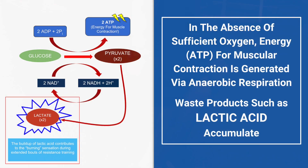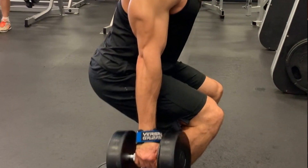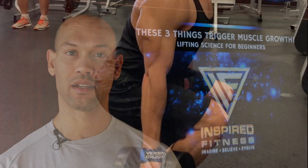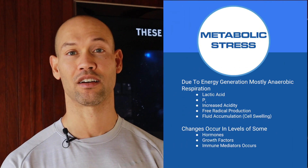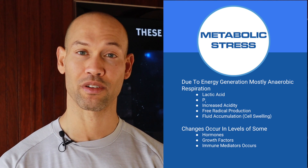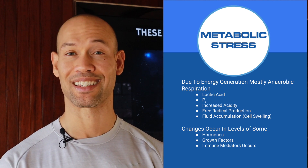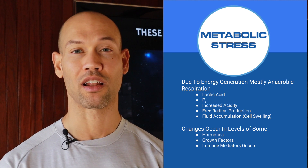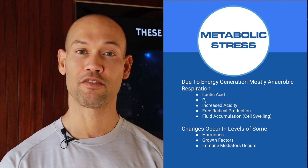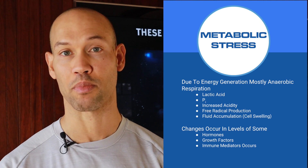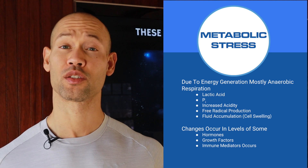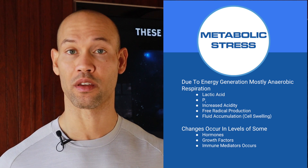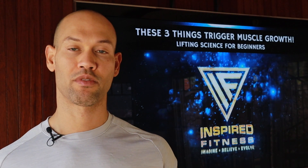One of the leading waste products is lactic acid — we're all familiar with this because during a sustained period of exercise we start to feel that burn in our muscles. In addition to lactic acid, other waste products accumulate including hydrogen ions and inorganic phosphate, free radical production increases, the overall acidity of the cellular environment increases, and we have an increase in cell swelling due to fluid accumulation. All of these things contribute to general metabolic stress of the muscle cells and trigger an overall hypertrophic response. These metabolic stresses themselves also trigger changes in the level of some hormones, various growth factors, and chemicals associated with the immune system.